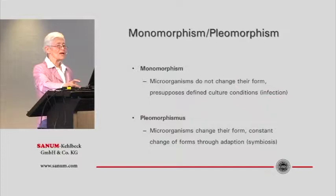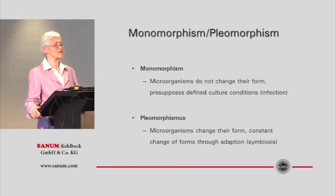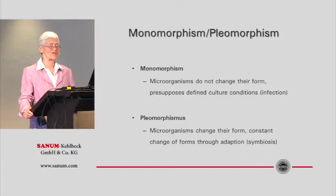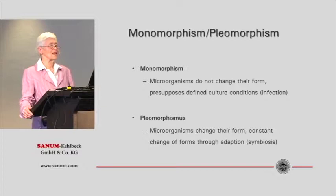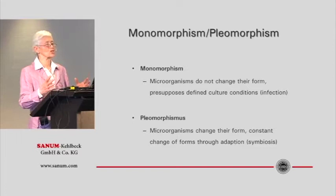Now I'd like to tell you something about the core of Sanum: the isopathics. Before we can begin, we first need to explain what we mean by this and what has been the ingenious discovery of Professor Enderlein. In the view of general orthodox medicine, particularly in microbiology, monomorphism implies a specific development of microorganisms — meaning they can only be found in one form, being single-shaped: the individual bacteria, viruses, fungi.